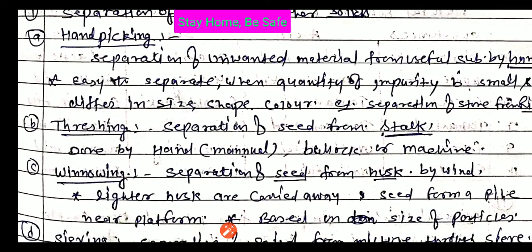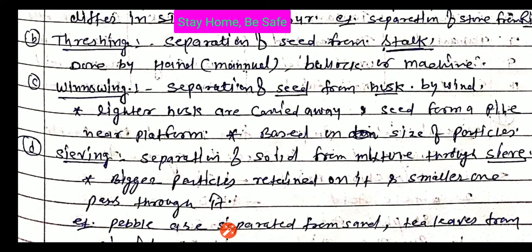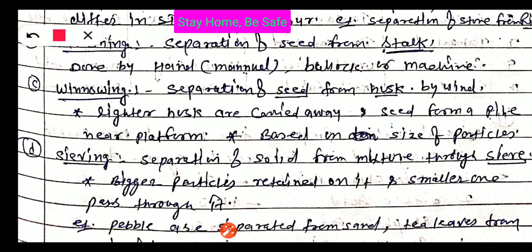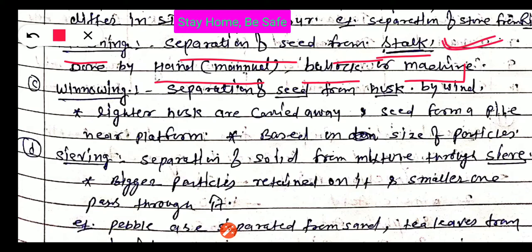This method is called the hand picking method. The second method is threshing. You are familiar with the word thresher — it is a machine by which we separate the seed from the stalk, like wheat. This can be done by hand, by bullock, or by a thresher machine. The meaning of threshing is the separation of the seed from the stalk.